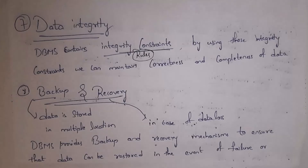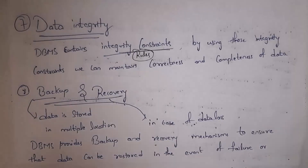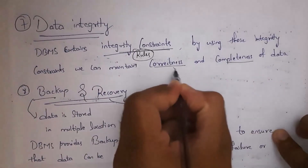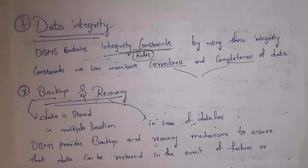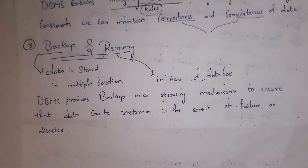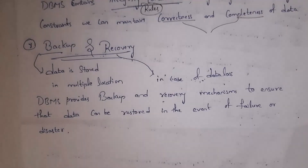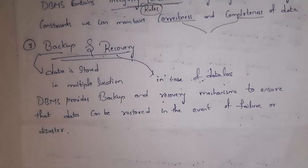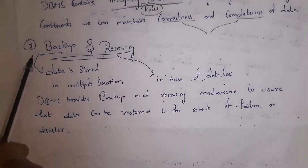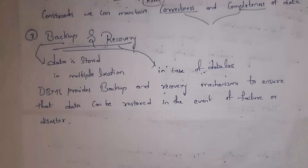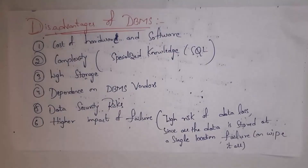The next feature is data integrity. In DBMS we can use integrity constraints — which are rules applied while creating tables. By using those rules, we can maintain correctness and completeness of data. The next feature is backup and recovery. DBMS software stores data in multiple locations automatically. If any data loss occurs, we can easily restore our data. Backup means creating multiple copies of data; recovery means restoring data in case of data loss.